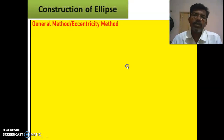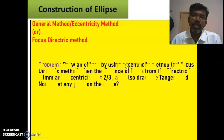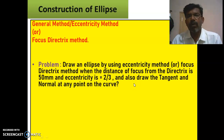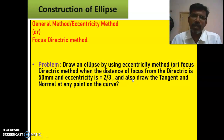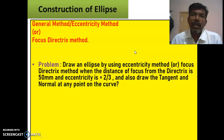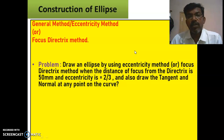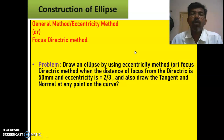Next we will go through the general method — the eccentricity or focus-directrix method — with a simple problem, covering the construction procedures step by step. Please carefully listen to the steps, then follow the animated presentation. Write down the steps first, then read them and go through the video. Ultimately you will understand how to construct an ellipse by the general method very easily.